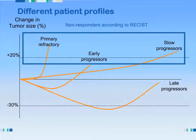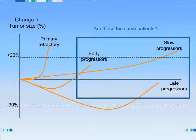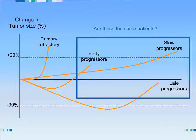Just as a remark: according to RECIST, these three categories of patients are considered non-responders, whereas they're obviously not the same patients at all. The question we have to answer is: are all progressors the same patients? That's an important question because you might want to decide where your threshold in progression is according to the answer.